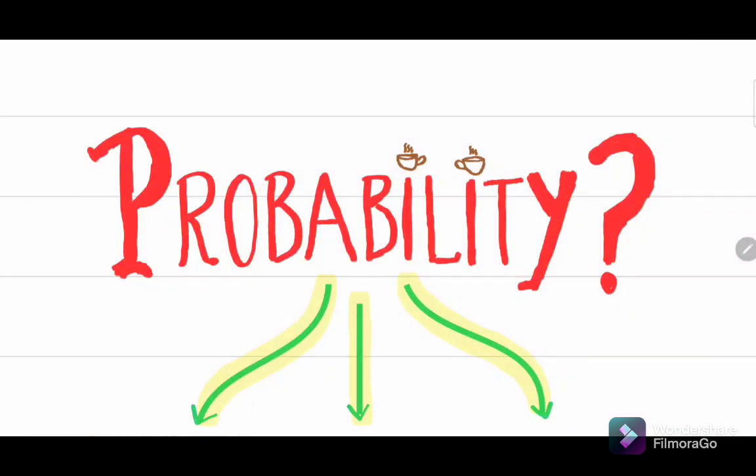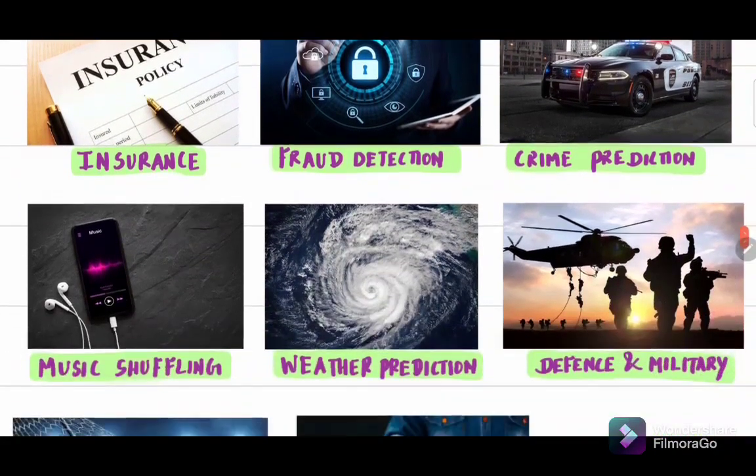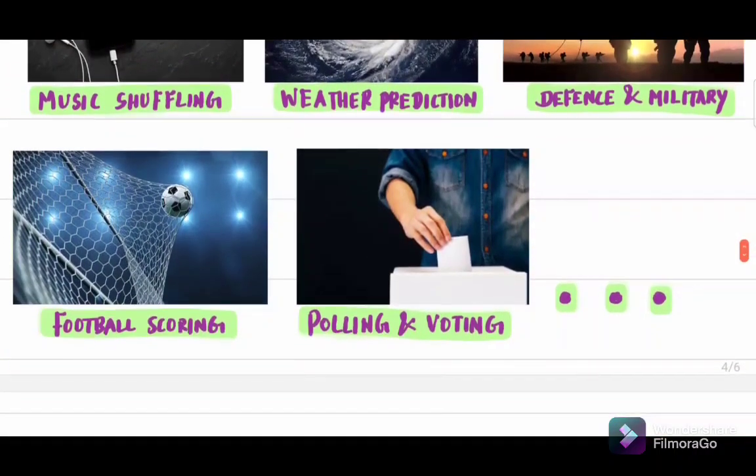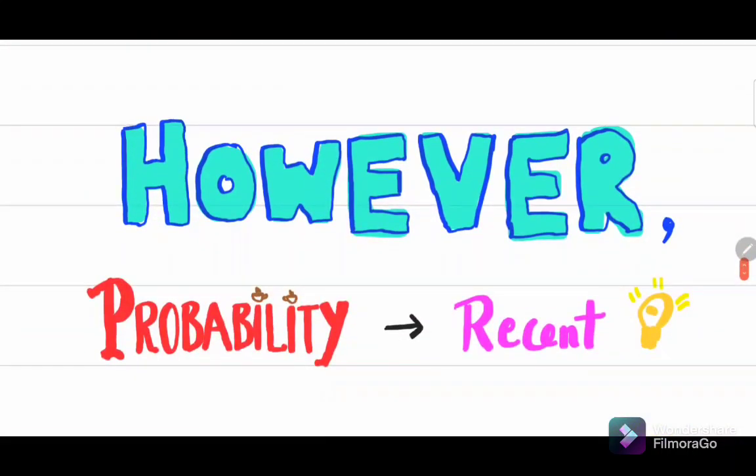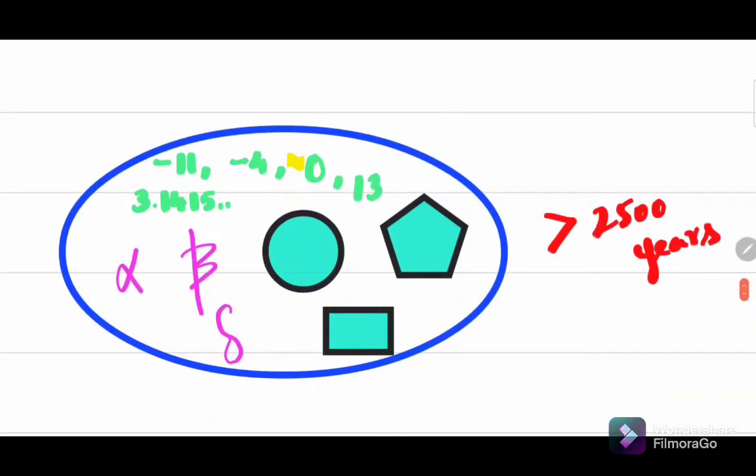Probability and likelihoods are everywhere around us from insurance fraud detection, crime prediction, music shuffling, weather prediction, defense and military, even football scoring, polling and voting, and so on. However, in the history of mathematics, probability is a very recent idea compared to other branches like numbers, algebra, and geometry, which were studied by ancient Greek mathematicians more than 2500 years ago.